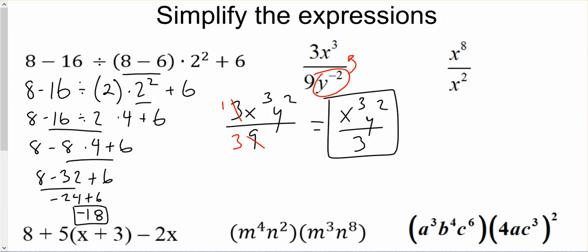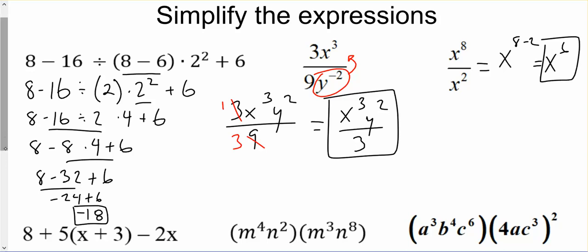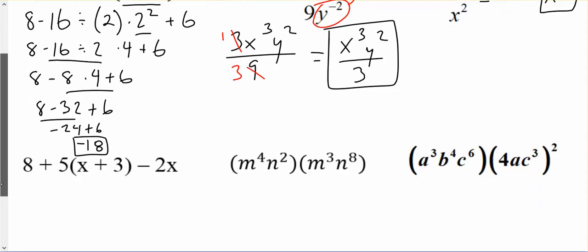Our next one uses the division property of exponents — we subtract our exponents. So this is 8 minus 2, which equals 6, across the bottom.